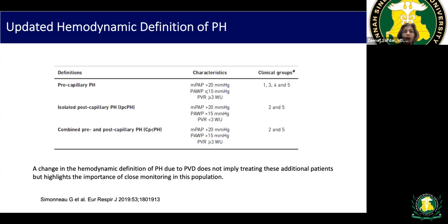The hemodynamic definition of pulmonary hypertension: pre-capillary pulmonary hypertension is defined when the mean pulmonary artery pressure is more than 20 mmHg. This is the updated guideline, decreased from the previous threshold of 25 mmHg, to capture more patients with early PH. The wedge pressure must be less than 15 mmHg and PVR greater than 3 to classify as pre-capillary PH — which includes groups one, three, four, and five.